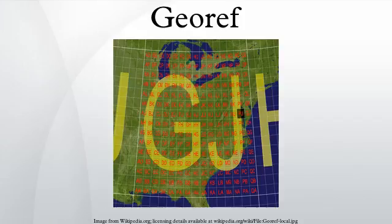GEOREF is a grid-based method of specifying locations on the surface of the Earth. GEOREF is essentially based on the geographic system of latitude and longitude, but using a simpler and more flexible notation. GEOREF was used primarily for air navigation, particularly in military or inter-service applications, but it is rarely seen today.